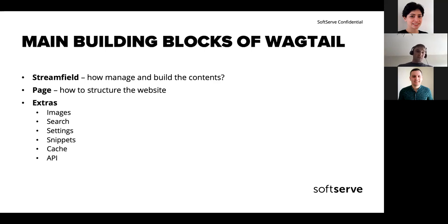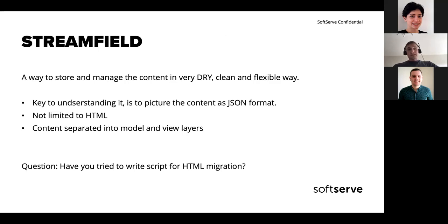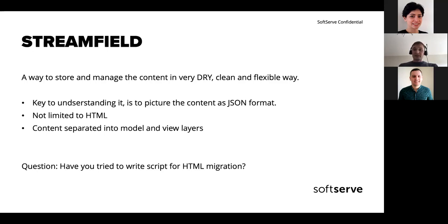We'll talk about the main building block of Wagtail, which is the page — how it's structured and how it looks underneath, because it's covered with abstraction, making it difficult to grasp. When we understand this underlying structure of the page, we'll work with it much more easily. Other features we'll mention include images, search settings, code snippets, cache, and API. The stream field is designed to replace the standard rich text editor, and it's a way to store and manage content in a very clean and flexible way.